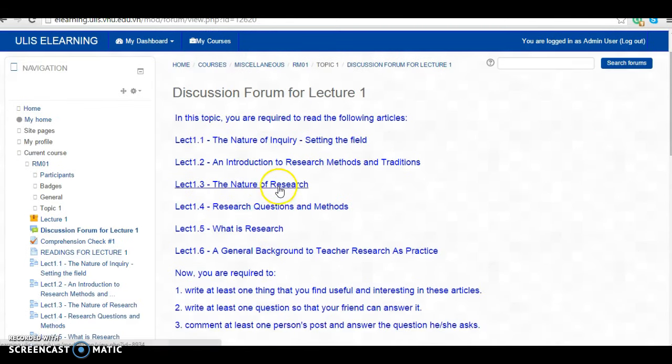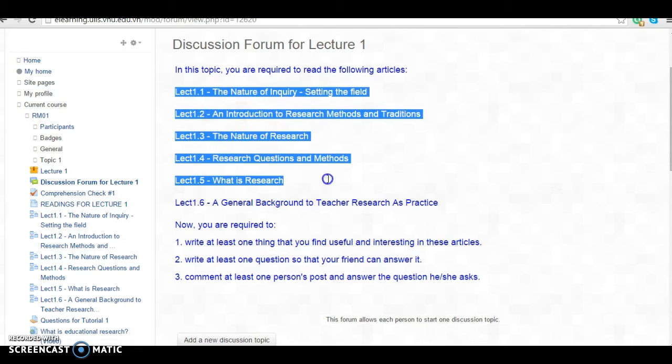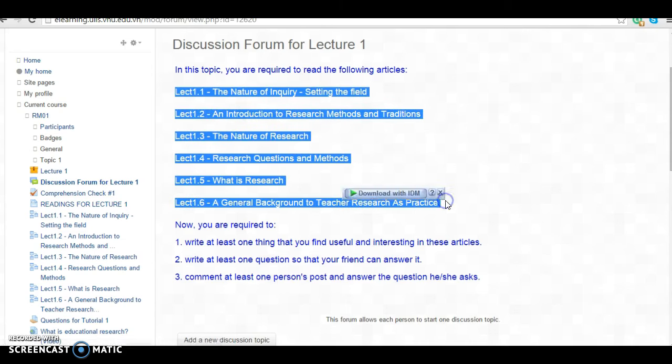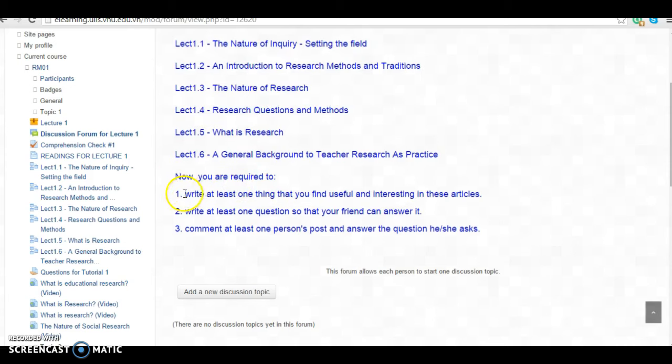In this activity you are required to read the following articles from 1 to 6. And then after that you're supposed to write at least one thing that you find useful and interesting in these articles and write at least one question so that your friend can answer it and comment at least one person's post to answer the question he or she asks.